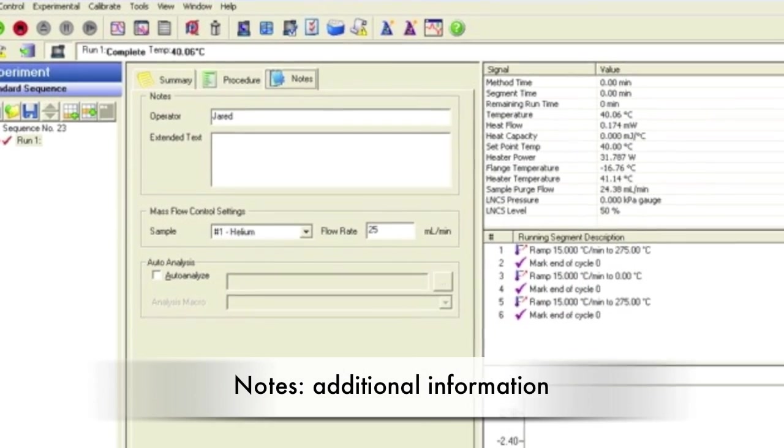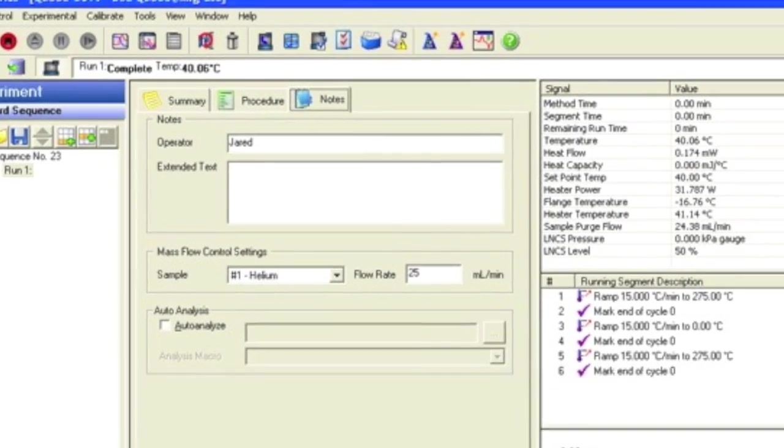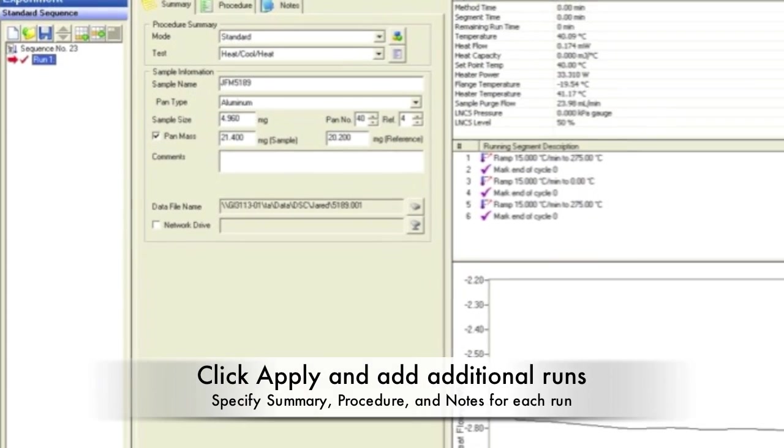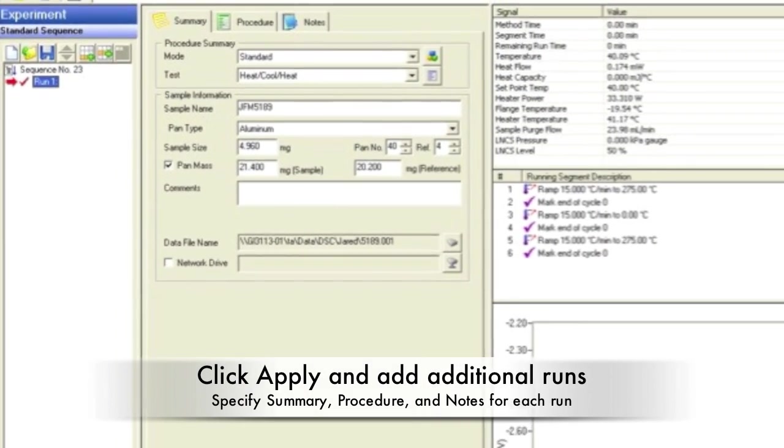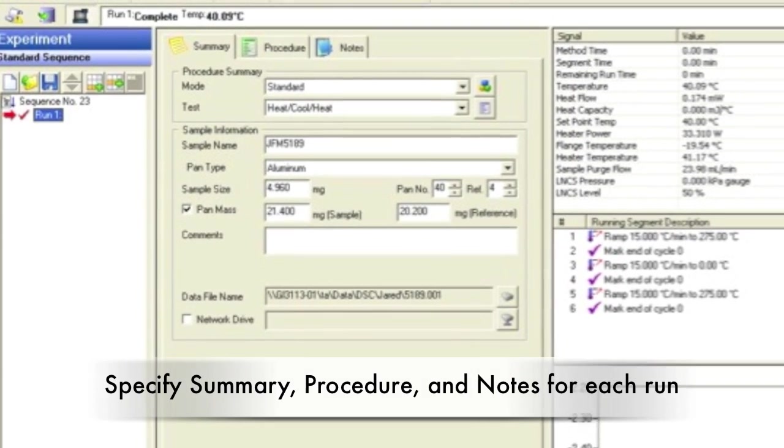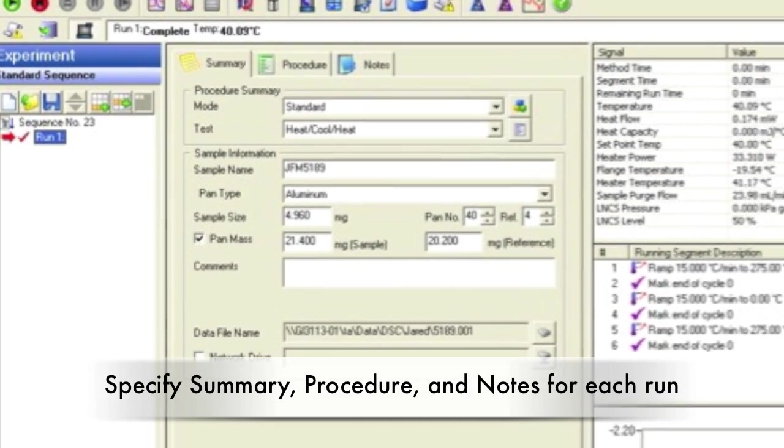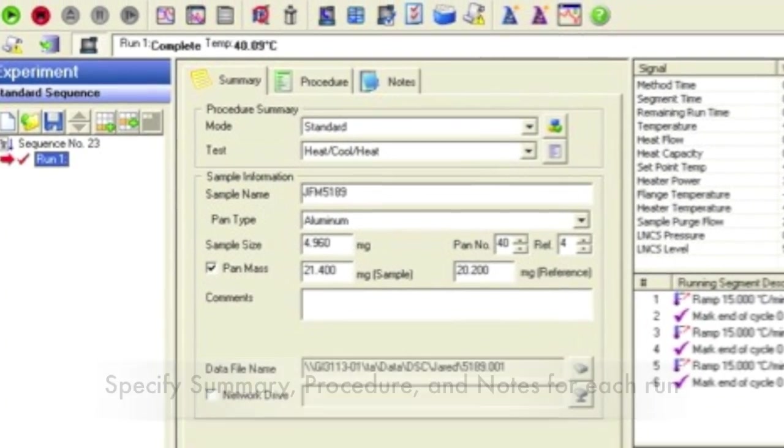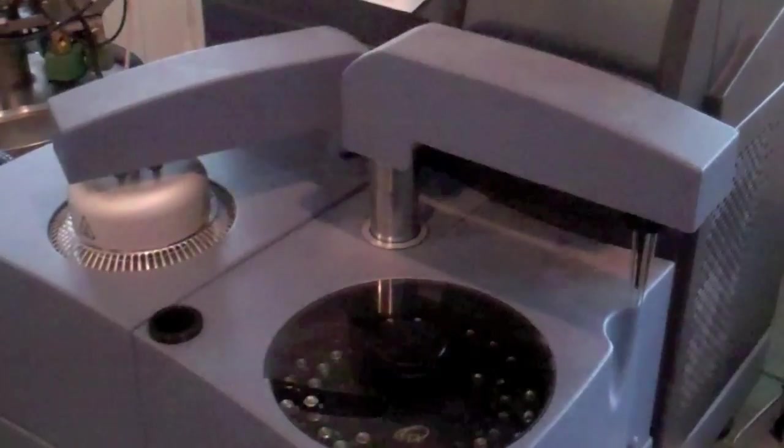In the notes tab, enter your name, sample, flow, and any additional information. Click apply to save all changes and add other runs if needed. Add a run by clicking on the add run button on the left. For each run added, the testing parameters in the summary procedure and notes must be specified. Make sure the software is set to begin with the first run.